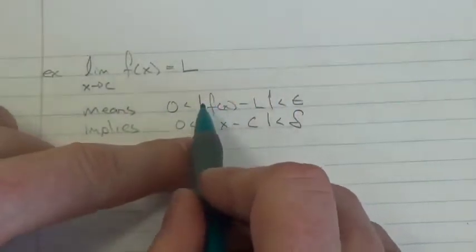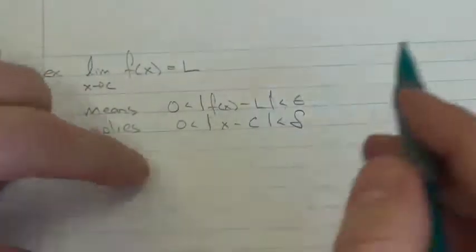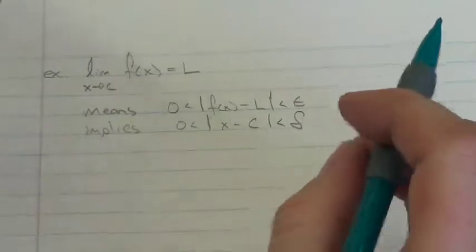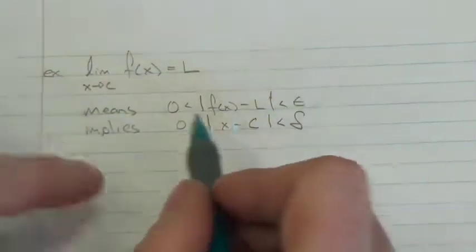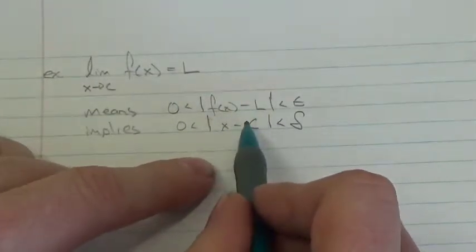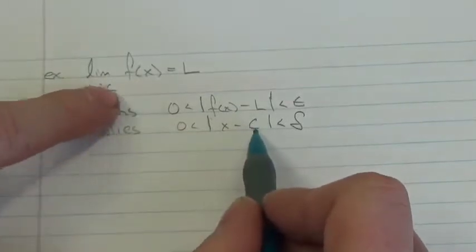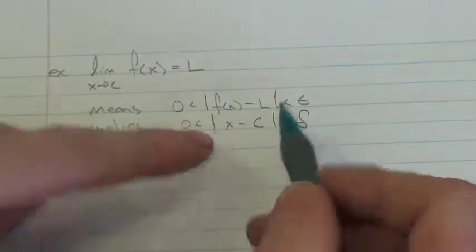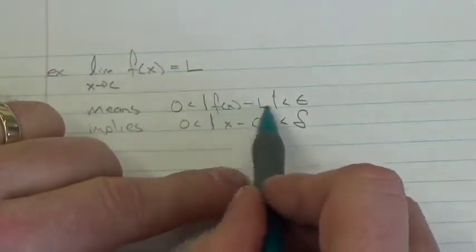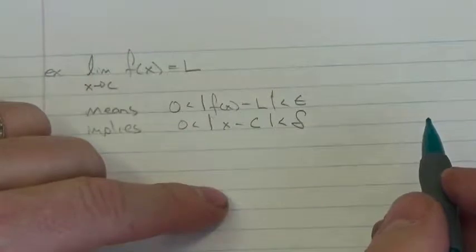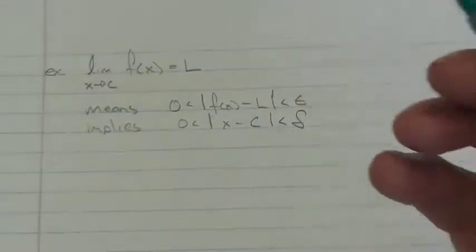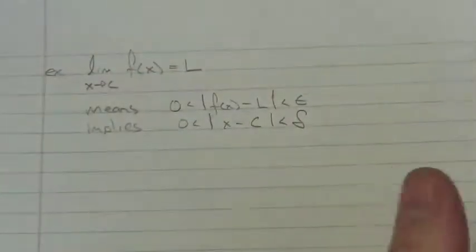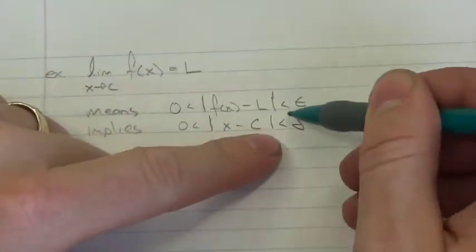That tolerance is greater than the absolute value of the distance between the function at some value of X minus L. When we put that tolerance on there, the existence of that tolerance implies that there's this interval around C such that as long as I get my X coordinate within delta of C, that will force my function to be less than epsilon away from L.